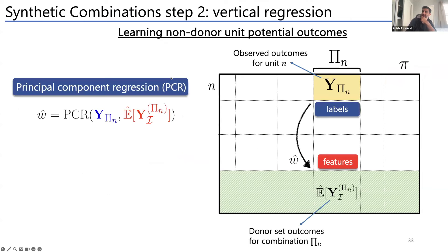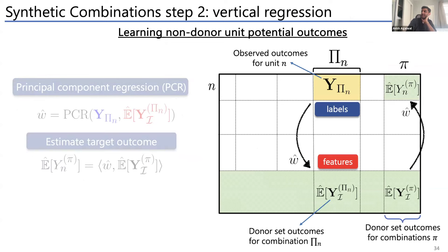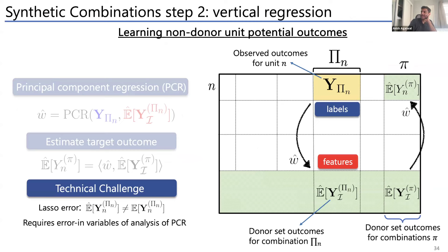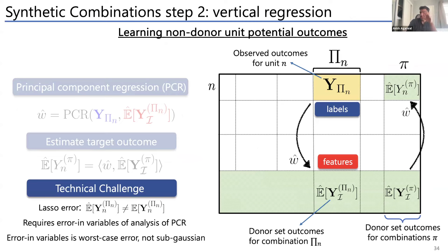The technical challenge is that the PCR step requires an errors-in-variables analysis — imputed values are noisy, so covariates are noisily observed. The noise isn't sub-Gaussian, requiring a redo of the technical analysis for PCR with noisily measured covariates.